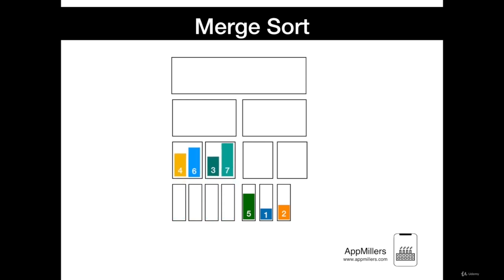When groups with multiple numbers are combined, the first numbers are compared. In our case, we compare 4 with 3; 4 is greater than 3, so 3 is moved first. Then with the remaining numbers, we compare first numbers again. We compare 4 with 7; 4 is less than 7, so 4 is moved. Then we compare 6 with 7; 6 is less than 7, so 6 is moved. Finally, the remaining number is 7, and 7 is moved. The combining of groups is repeated recursively until all numbers from one group are finished.